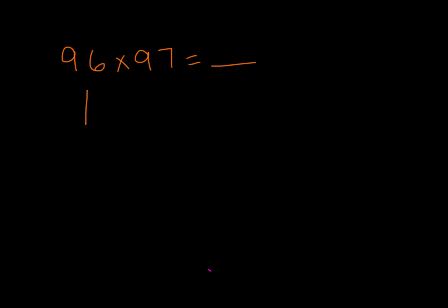We find the difference of both of these from 100. So 96 is 4 away from 100, 93 is 3 away from 100. Our next step here is we multiply these two numbers and you get 12. And 12 will be the last two digits of our answer.